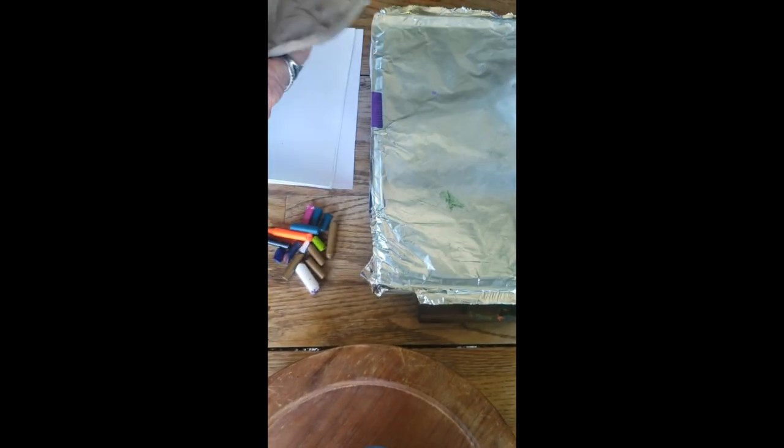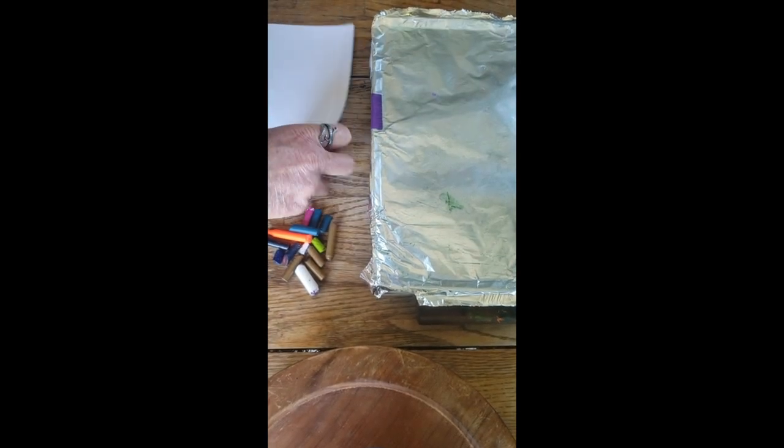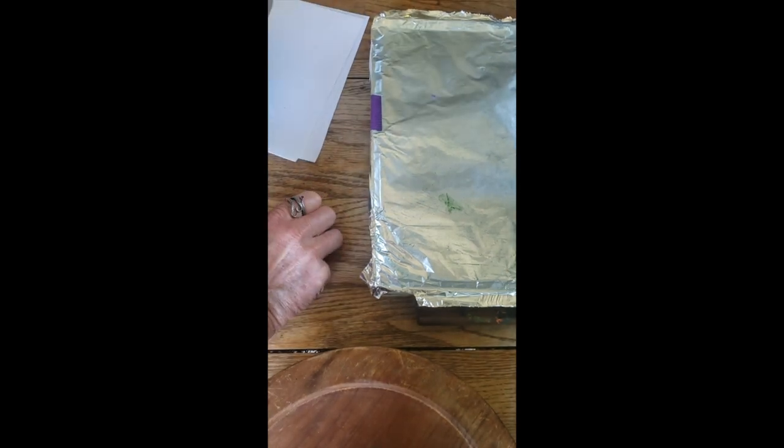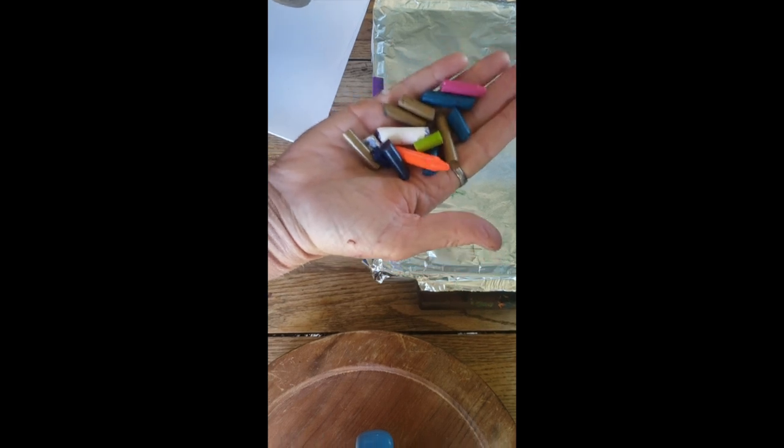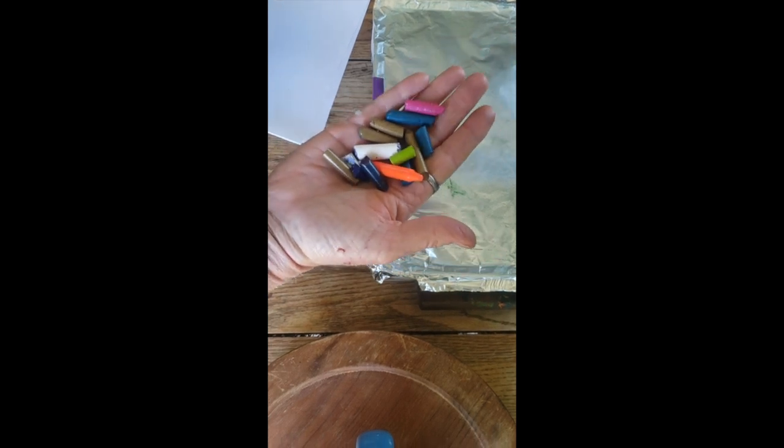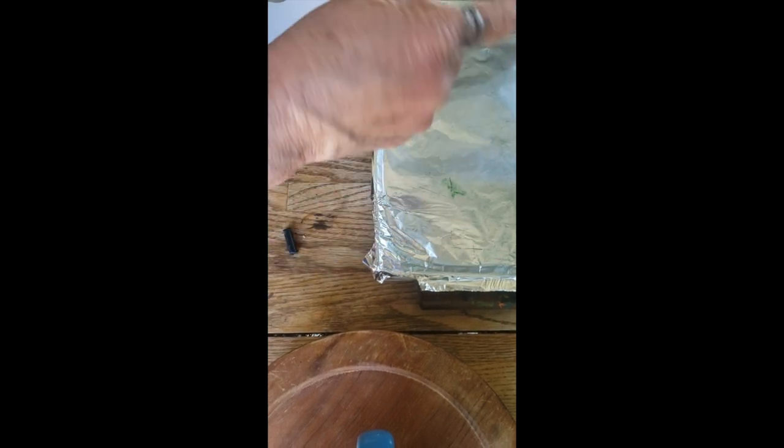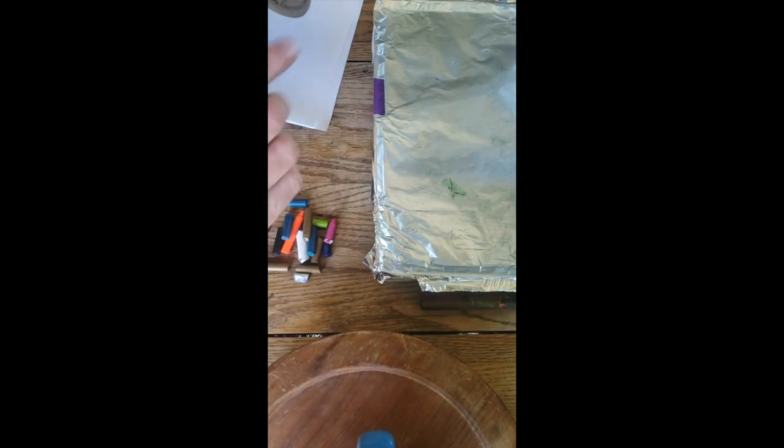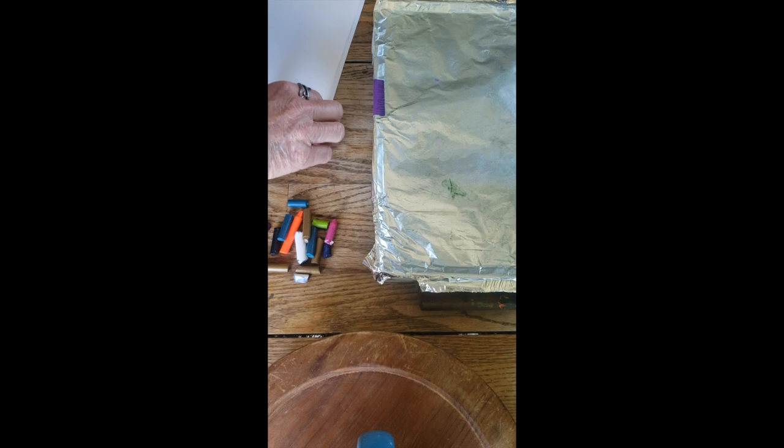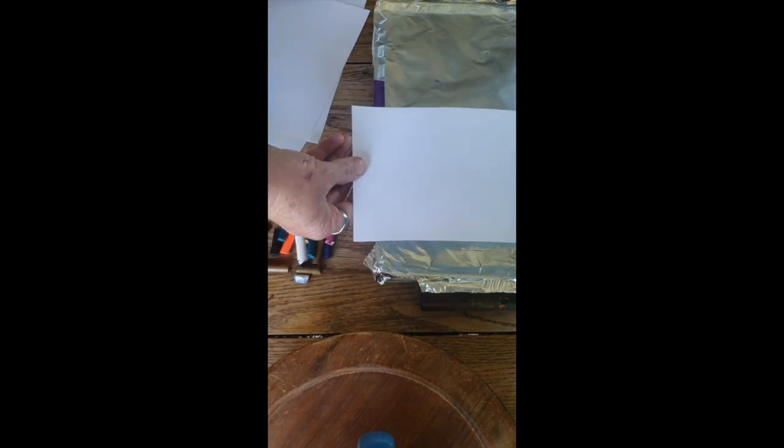I have some paper and a good selection of naked crayons that I'm going to be using. I'm going to be melting these on there, and there's a couple different ways we can do that. We can do it directly onto the paper.